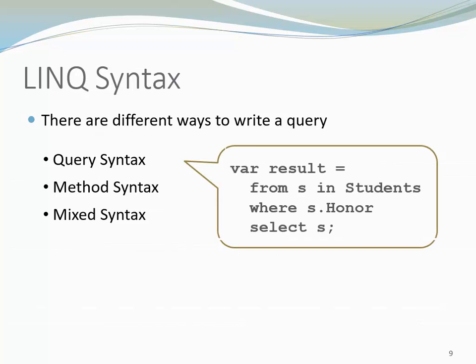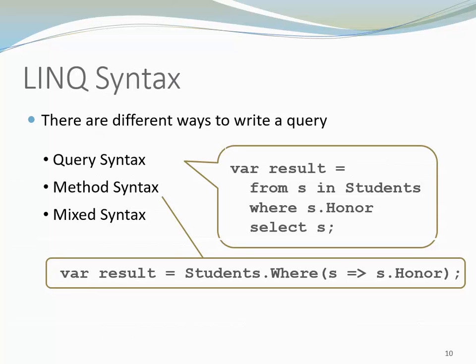Here is an example of a query written in query syntax, and here is the same query written in method syntax. Query syntax and method syntax are semantically identical. The compiler translates query syntax into the corresponding method calls, and there's no performance benefit of using one over the other. Many people find the declarative query syntax easier to read.